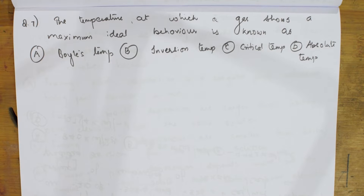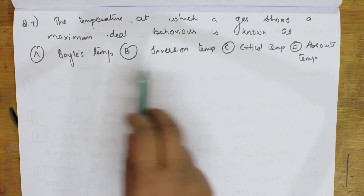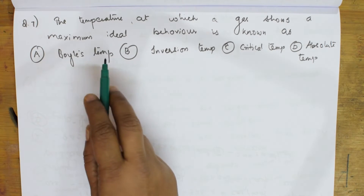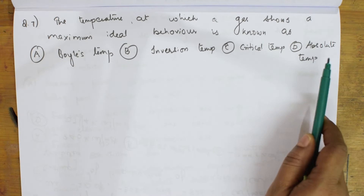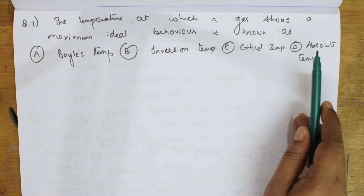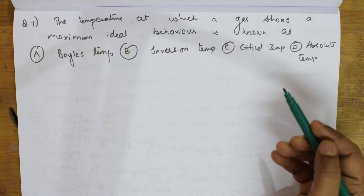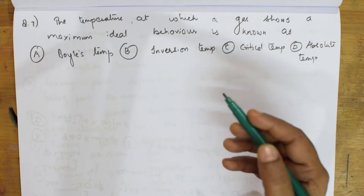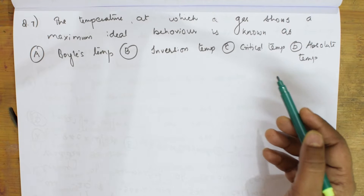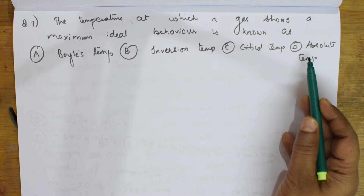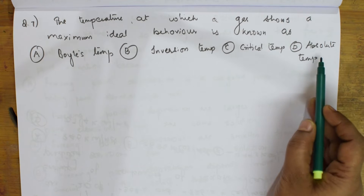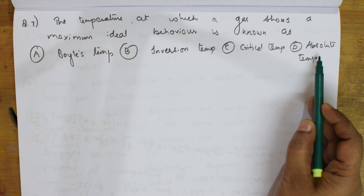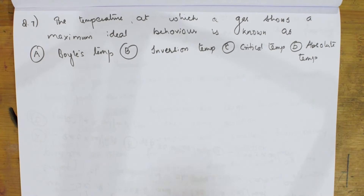Before selecting the answer, I need to be clear about the meaning of all these temperatures. Let's start with the last one — absolute temperature. Absolute temperature is the temperature measured from absolute zero, taken in Kelvin. But here they ask about the temperature at which a gas shows maximum ideal behavior, so this is not it.